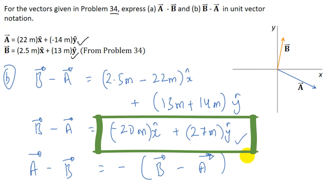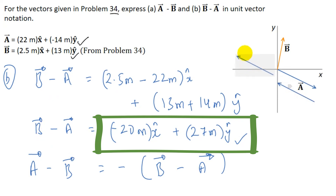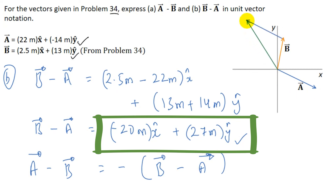We can also show vector B − vector A on the graph. Negative of vector A is just opposite in direction with the same magnitude. Placing minus vector A at the head of vector B gives the resultant vector B − vector A. This completes the solution for this question.